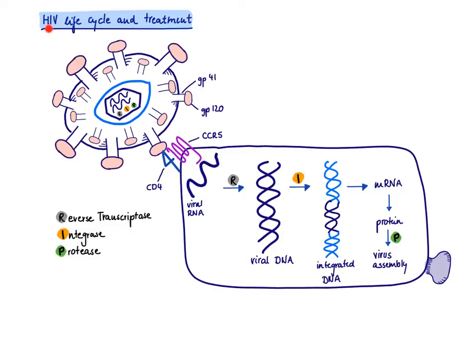In this video, we'll cover the HIV life cycle and basics on its treatment. HIV stands for human immunodeficiency virus, meaning an infected patient will be immunodeficient and present with opportunistic infections and neoplasms. The target of HIV is the CD4 T cell, which is a T helper cell that helps other immune cells do a better job. Very low CD4 T cell levels result in a poor immune response.